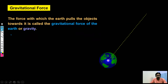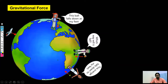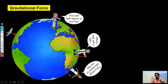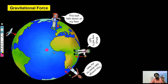Let's have another example. In this picture we can see there are three persons, and all three persons are standing at different places of the world. All three are dropping some object, but the same thing happens with all of them — every object falls towards the center of the earth. It never goes in any other direction; it always moves towards the center of the earth.